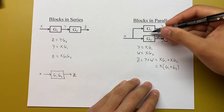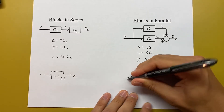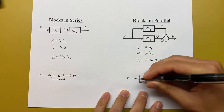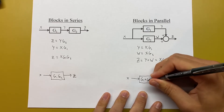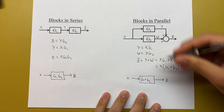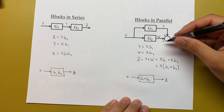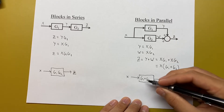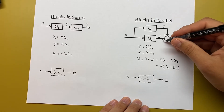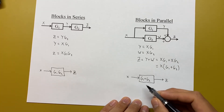Factoring out x, we get z equals x times (G1 plus G2). So we can redraw this as one block, G1 plus G2, with input x giving output z. If the signs were different — say one was negative — you'd end up with a negative G2 in the combined block.